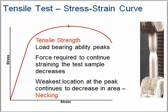The next thing is the tensile test — the load-bearing ability breaks. What's starting to happen here is it's starting to snap. The load-bearing ability peaks, and the force required to continue straining the test sample decreases. At this point you wouldn't have to keep pulling as hard. This becomes the weakest location at the peak and continues to decrease in area.